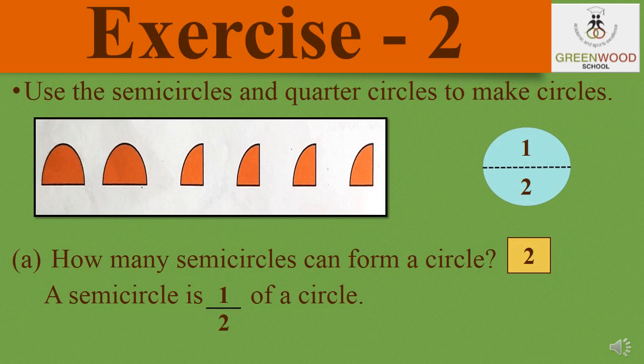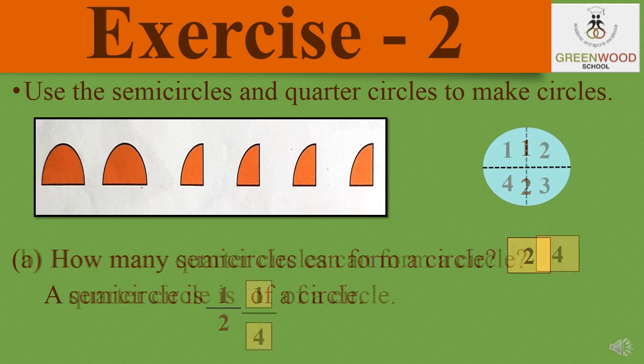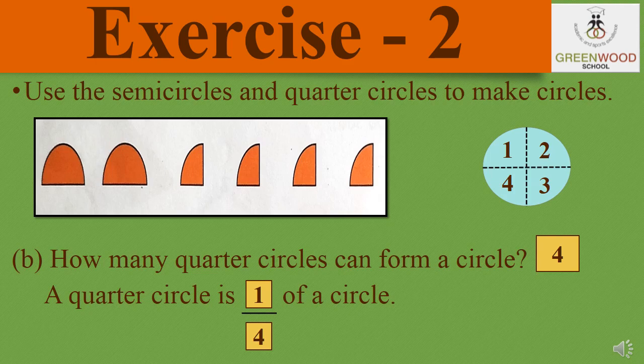Exercise 2: Use the semi-circles and quarter-circles to make circles. First: how many semi-circles can form a circle? One circle needs two semi-circles to form, so the answer is two. Second: how many quarter-circles can form a circle? A quarter is one-fourth part of a circle, so to make a whole circle, we will need four quarters. So, our answer is four.